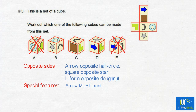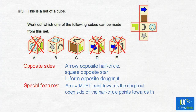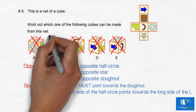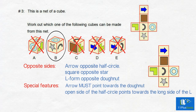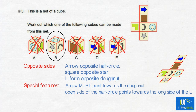Special features: the arrow must point towards the doughnut — we can eliminate D because the arrow points towards the L-shape. The open side of the half circle points towards the long side of the L — we can eliminate C because the open end of the half circle points towards a short side of the L-shape. The correct answer is B. This is how the cube will be formed.